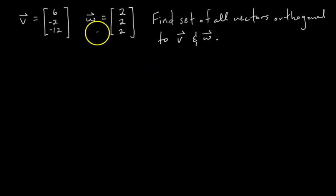Okay, so we have these two vectors, V and W, and the question is: how can we find the set of all vectors that are orthogonal—just means perpendicular—to both V and W?